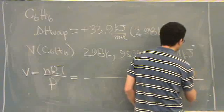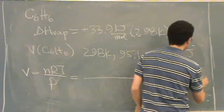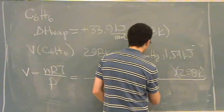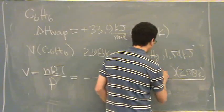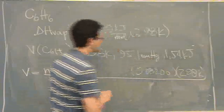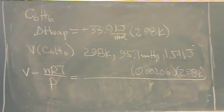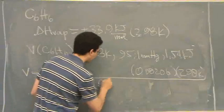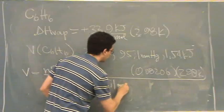I'll do it backwards. T is 298 Kelvin. R, same R as before, 0.08206. So there's R and T, I'll do n in just a second. P, 95.1 millimeters mercury.